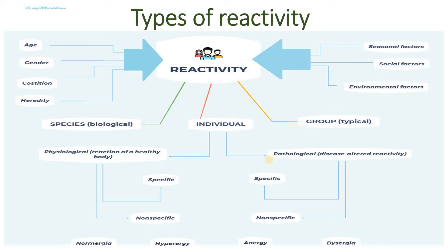This diagram shows the types of reactivity, as well as conditions and factors that can affect reactivity. Reactivity is divided into biological, species, group, typical, and individual.